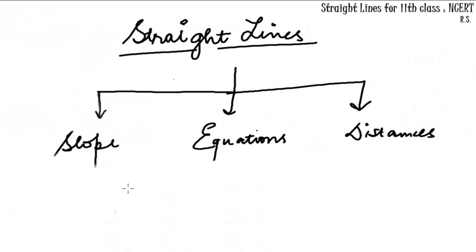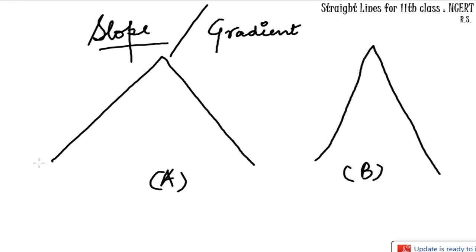The straight lines chapter is divided into three major portions: slope, equations, and distances. We are going to start with slope as it is the first portion and a main portion which helps in building up the chapter.